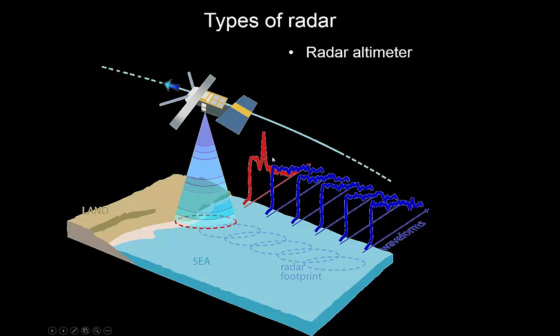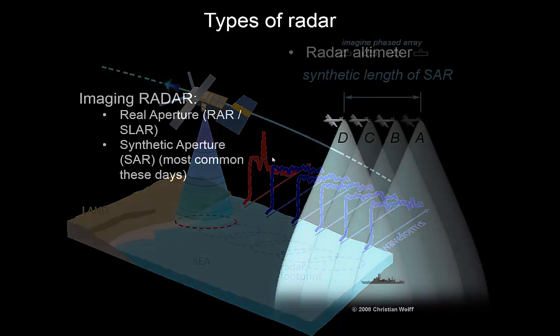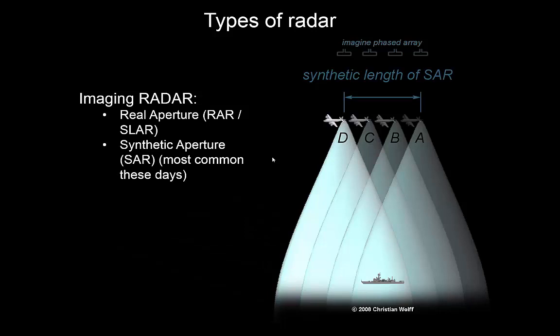So that's the radar altimeter — quite simple compared to radar images, which are a little bit more complicated to interpret. In this case we don't get a point return but we actually get an image. There are two ways of doing that. You might come across the term real aperture radar, but probably you'll come across the term synthetic aperture radar, or SAR, quite a lot.